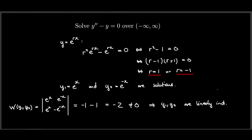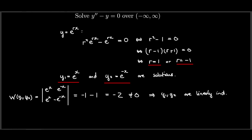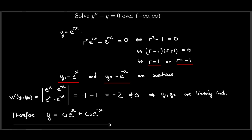We found two linearly independent solutions y1 and y2, so the general solution is just the linear combination y = c1·e^x + c2·e^(−x). The nice thing about mathematics is that one can test their solution — you can take this general linear combination, plug it directly back into the differential equation, and verify that you get zero.